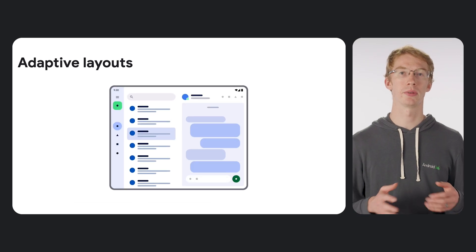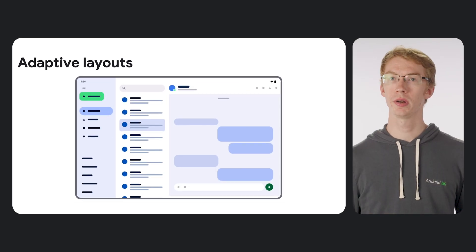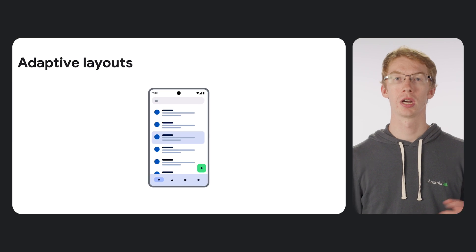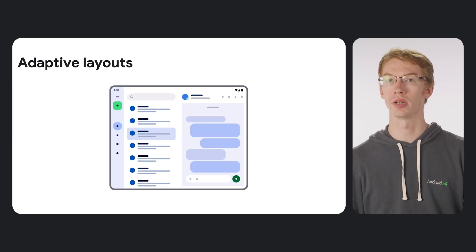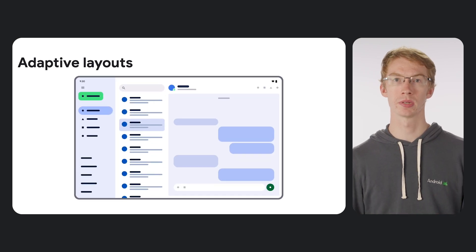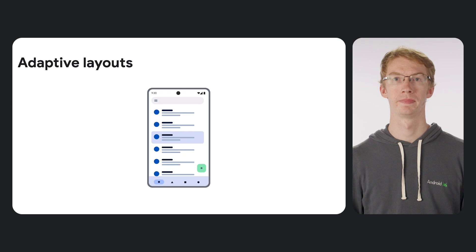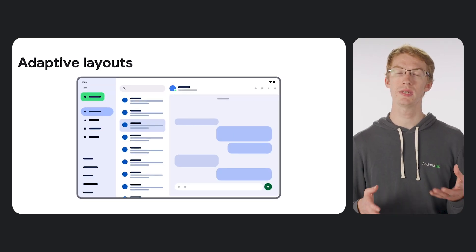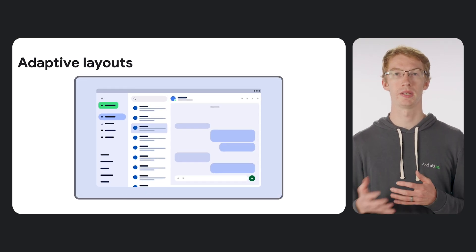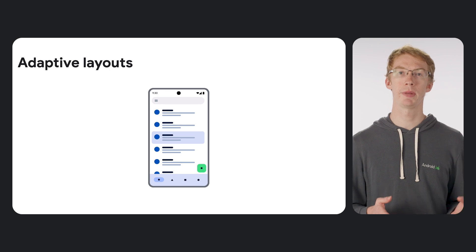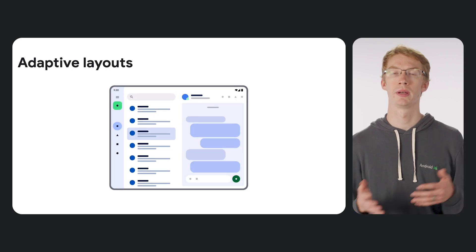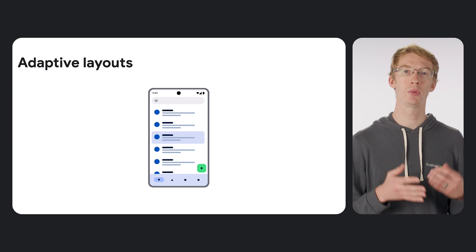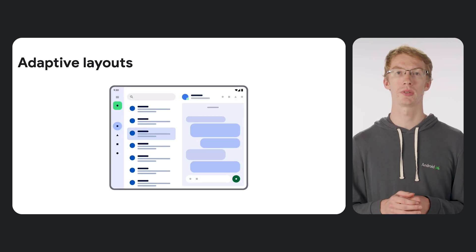Let's start with what adaptive layouts are. They don't just stretch as the window size and other conditions change — content is hidden or shown, and some components are replaced with other ones. Implementing responsive layouts that just stretch is these days mostly straightforward. Instead of fixed sizes, you use a combination of weights, paddings, and containment to get behavior that adjusts reasonably well within small size changes.